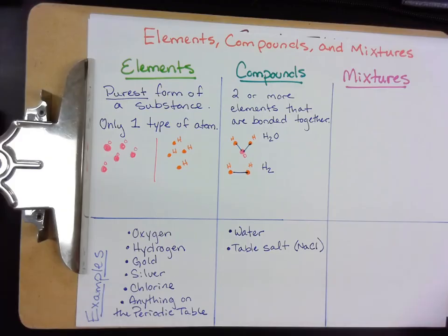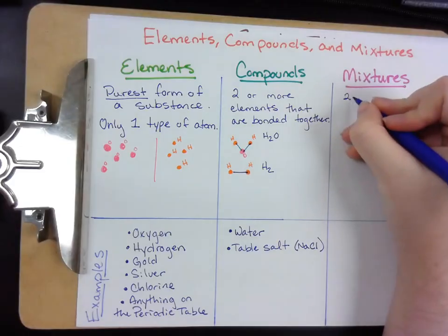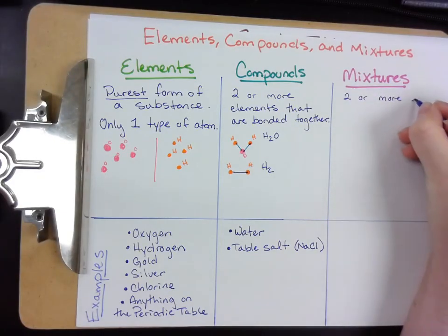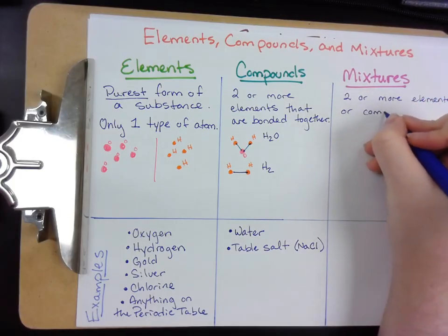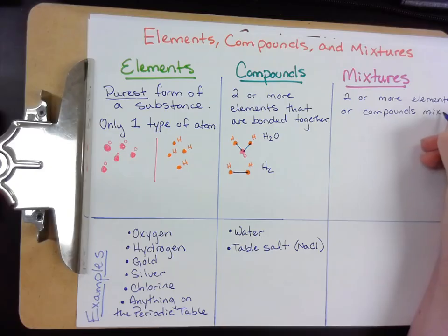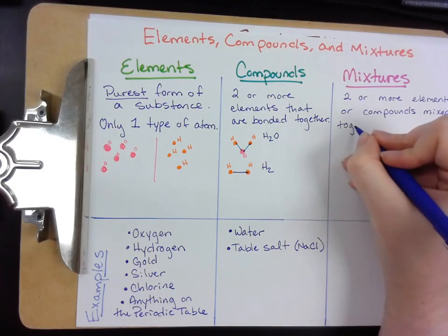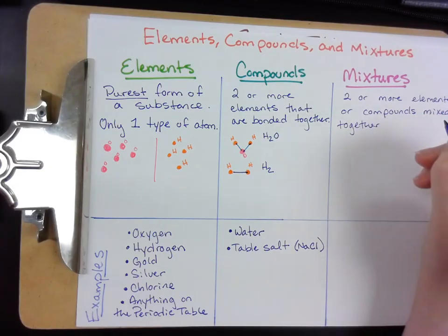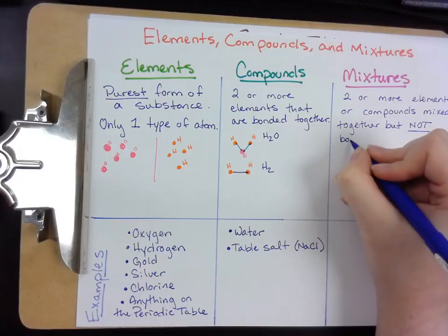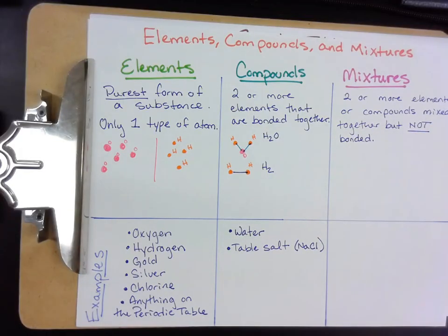Last up we've got mixtures. So a mixture is two or more elements or compounds mixed together. It's in the name. They're mixed together. But what makes them different from compounds is that they are not bonded.